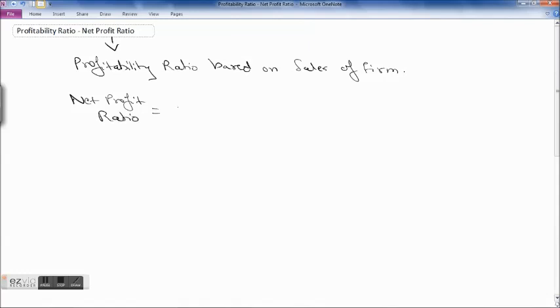As the name itself suggests, it is net profit upon sales into 100. So this is how we calculate net profit ratio. It basically shows the percentage of net profit including all your operating as well as non-operating expenses to sales into 100.